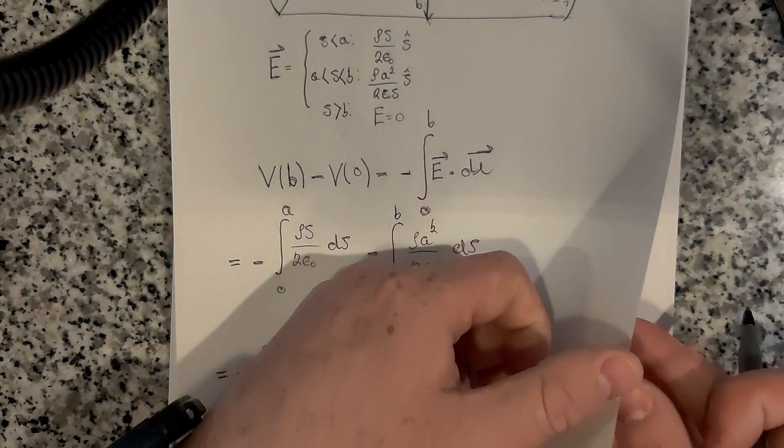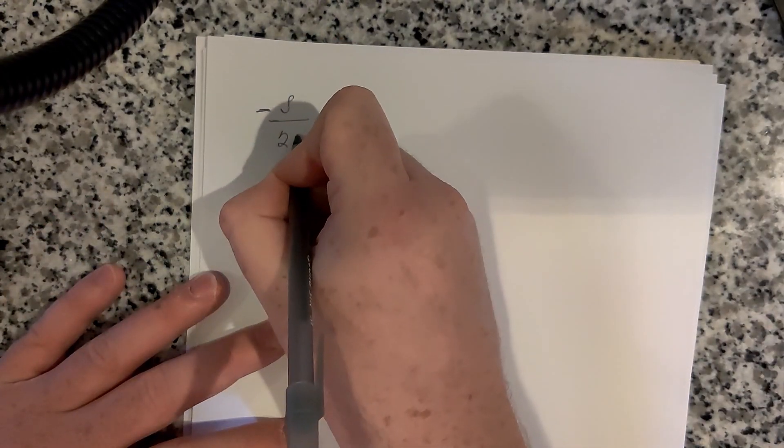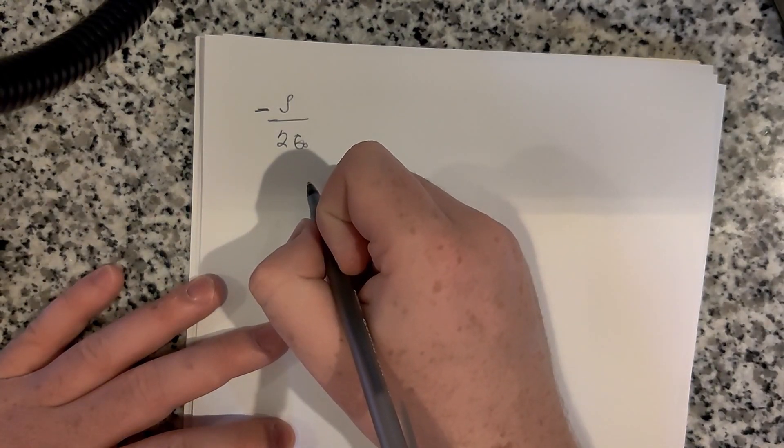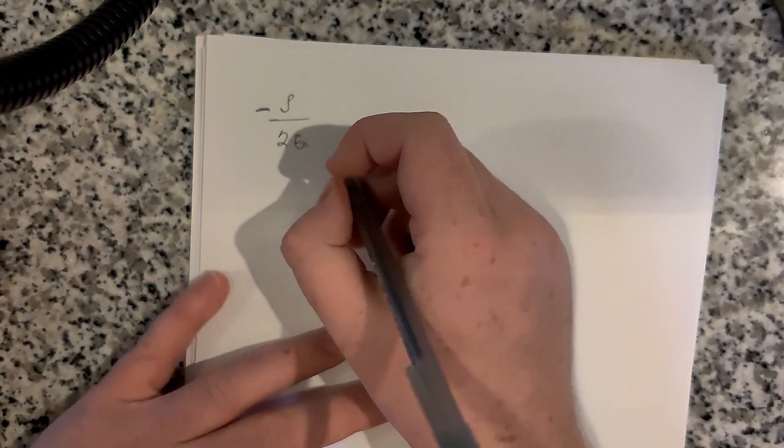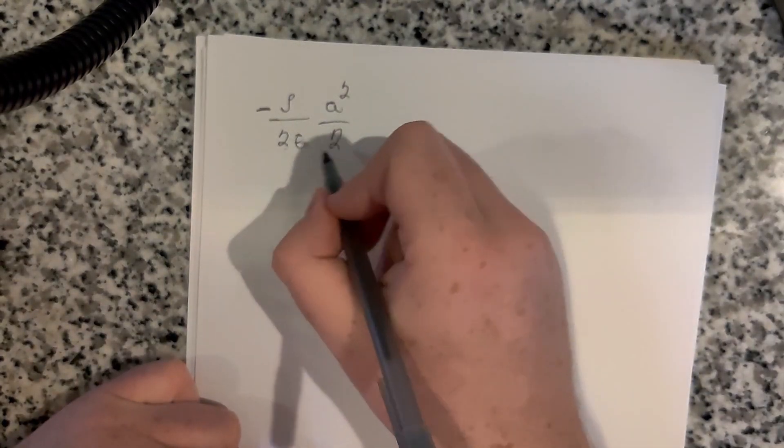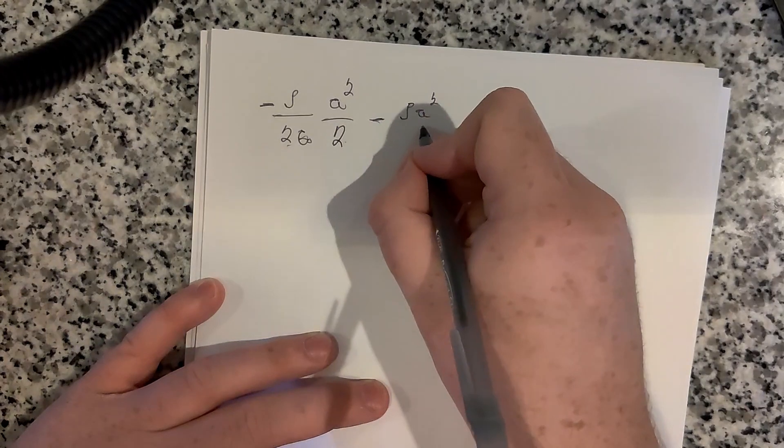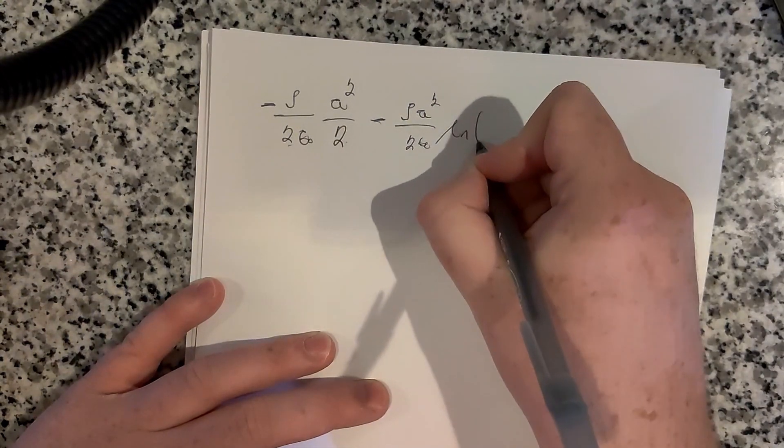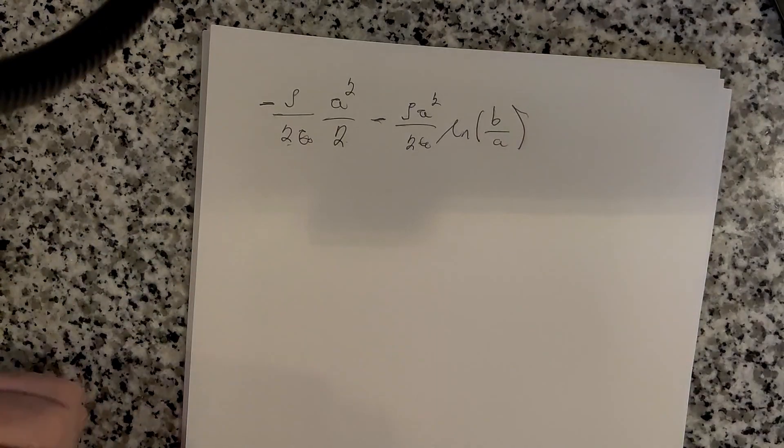Let me do this on a new page. So we have minus rho over 2 epsilon naught, then S squared over 2, evaluated at this bound, it would be A squared over 2 minus zero over 2. So the second bound is zero, so we just have A squared over 2. And then we have minus rho A squared over 2 epsilon naught times the natural log of B over A.